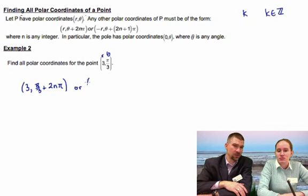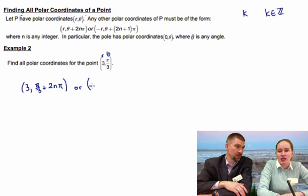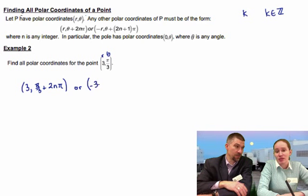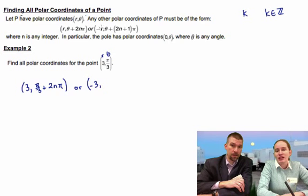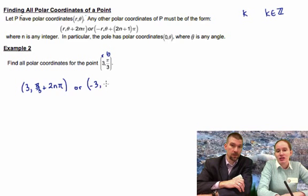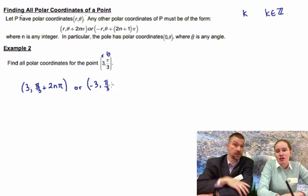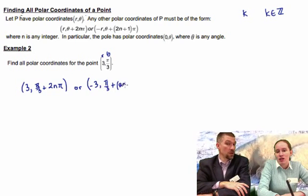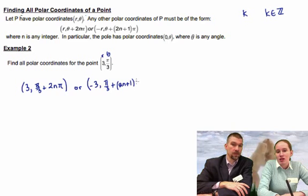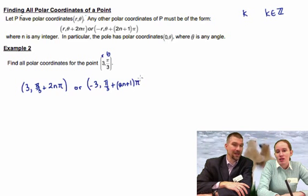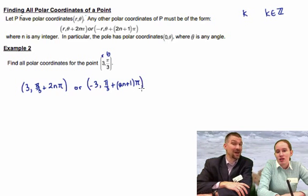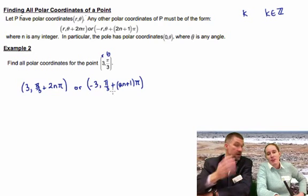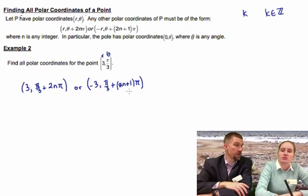For the second form we need negative R, so negative 3, comma, π/3 + (2n+1)π. What does (2n+1) do? It gets us to odd numbers, which is why we need to add odd multiples of π here, not even ones.